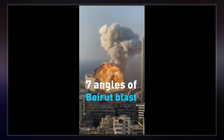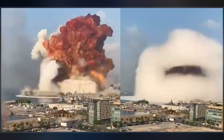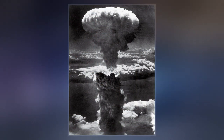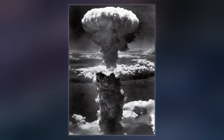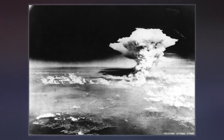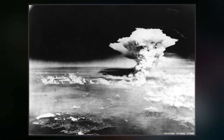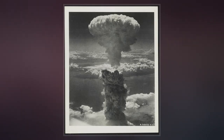Mushroom clouds result from the sudden formation of a large volume of lower-density gases at any altitude, causing a Rayleigh-Taylor instability. The buoyant mass of gas rises rapidly, resulting in turbulent vortices curling downward around its edges, forming a temporary vortex ring that draws up a central column — possibly with smoke, debris, and or condensed water vapor — to form the mushroom stem.